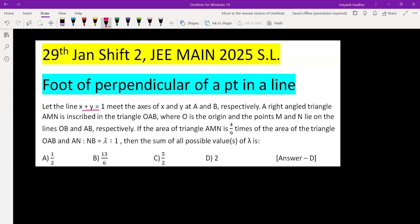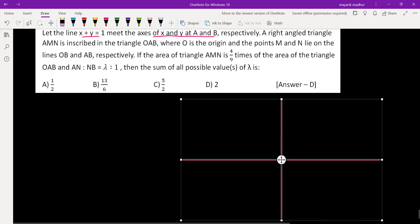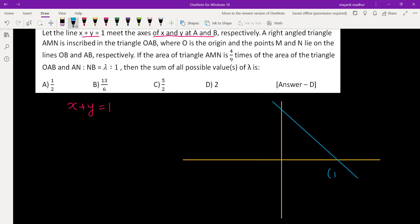Let the line x plus y equal to 1 meet the axes of x and y at A and B. Let's draw the line x plus y equal to 1. It will meet the coordinate axes at the point 1 comma 0 and 0 comma 1. This line is meeting x-axis at 1 comma 0 and y-axis at 0 comma 1, and these points are A and B.